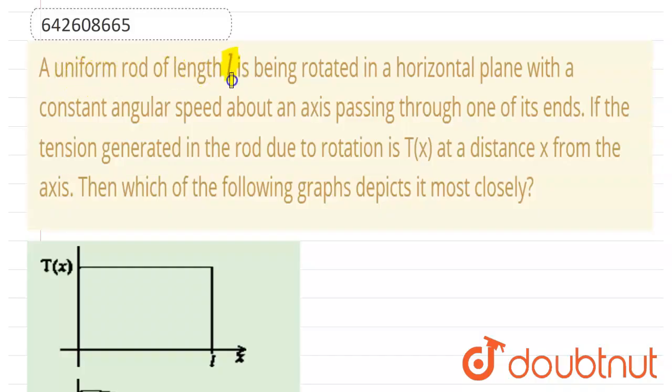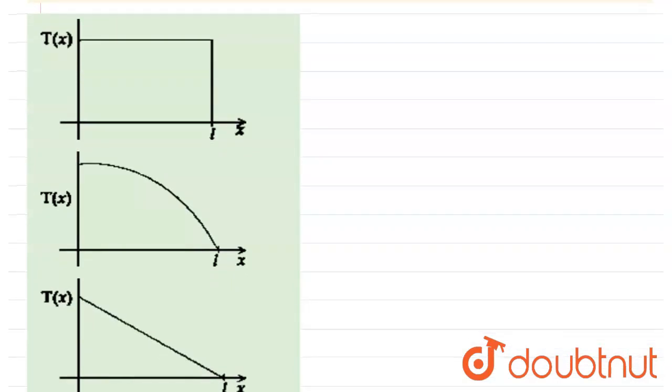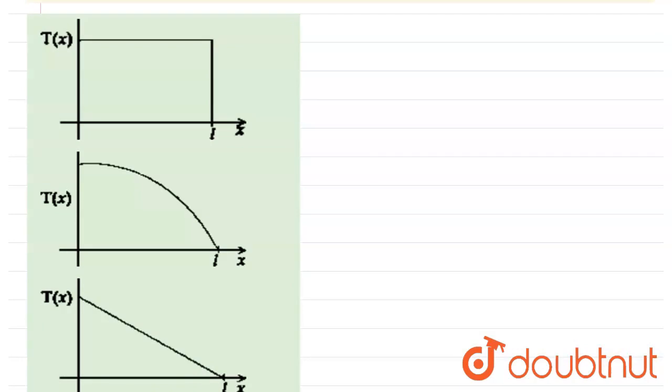length l is being rotated in a horizontal plane with constant angular speed about an axis passing through one of its ends. If the tension generated in the rod due to rotation is T(x) at a distance x from the axis, which of the following graphs depicts this most clearly?